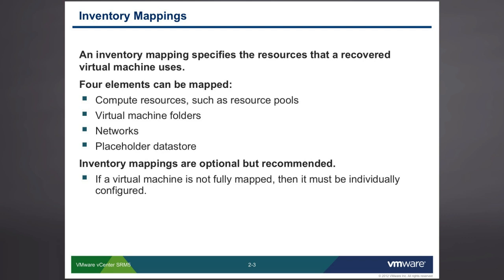We do exactly the same thing with networks. It's reasonable to say that I've got a production network in the New York office, but I maybe don't want my virtual machines, when they fail over from New York to Chicago, to actually show up on the Chicago production network. We may want them on an isolated network unto themselves, or on a completely different VLAN. Inventory mappings are essentially placeholders which say: when this machine fails from the protected site to the recovery site, we're going to place them on this network.